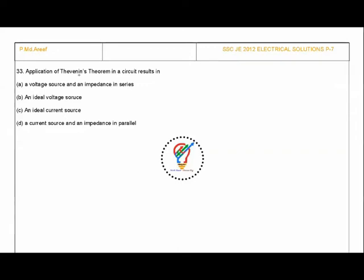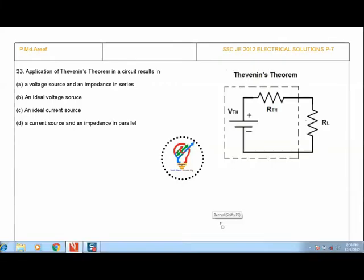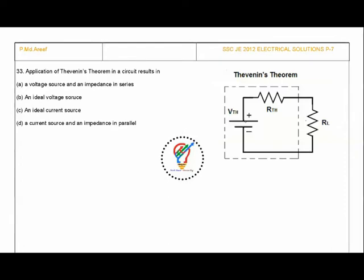Application of Thevenin's theorem in a circuit results in: (a) a voltage source and an impedance in series, (b) an ideal voltage source, (c) an ideal current source, or (d) a current source with an impedance in parallel. The answer is A. Note that Norton's equivalent would be a current source with impedance in parallel.